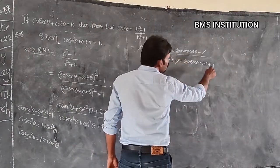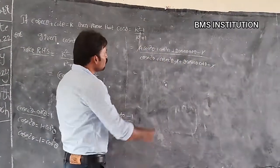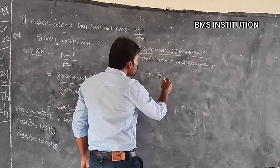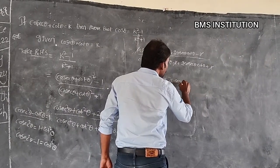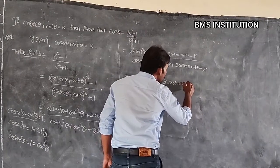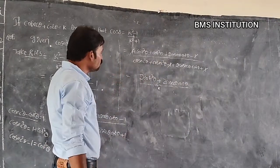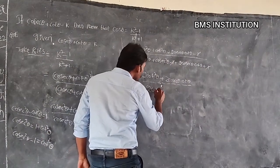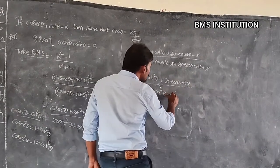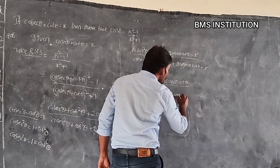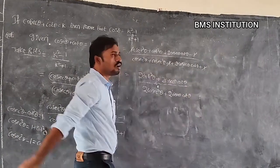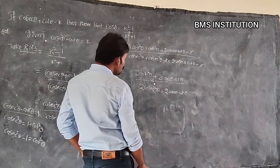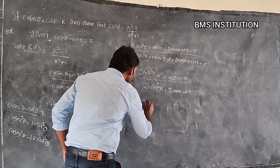In the numerator, minus 1 plus 1 cancels, leaving 2 cot²θ + 2 cosecant θ · cot θ. Similarly in the denominator, 2 cosec²θ + 2 cosecant θ · cot θ. Now take 2 cot θ as a common factor from the numerator.